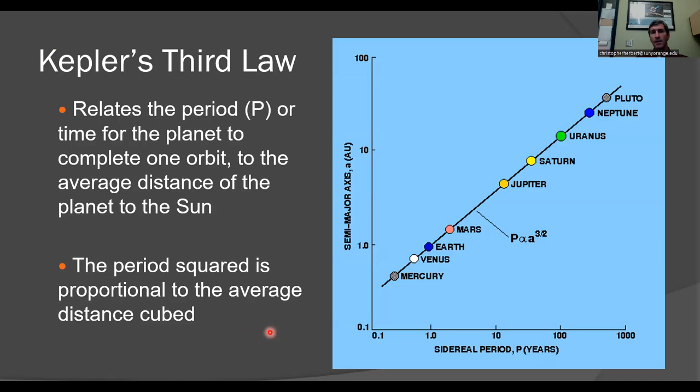Kepler's third law is related to something that we looked at earlier when we showed that the period squared of the orbit was proportional to the radius of the orbit cubed. This is for circular orbits, but of course, this also holds for elliptical orbits, too.